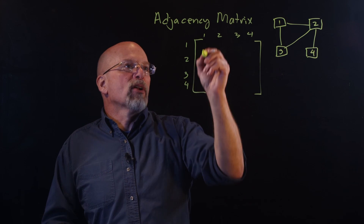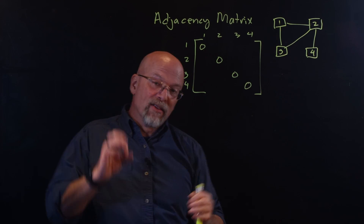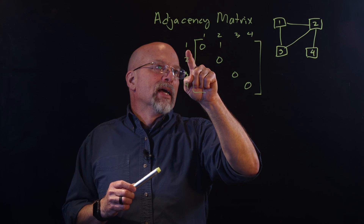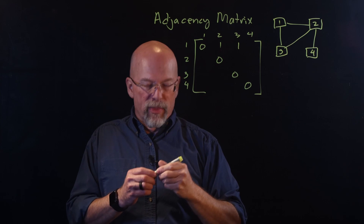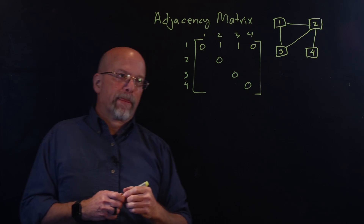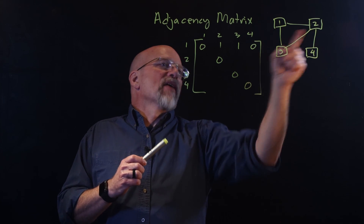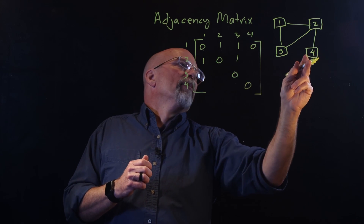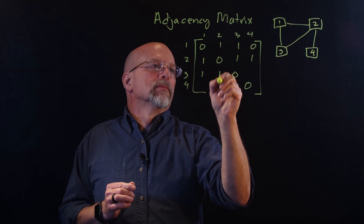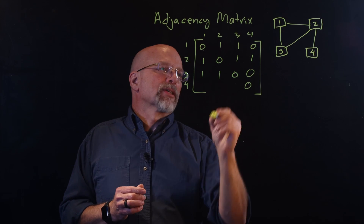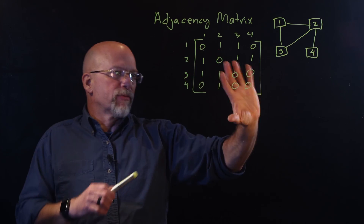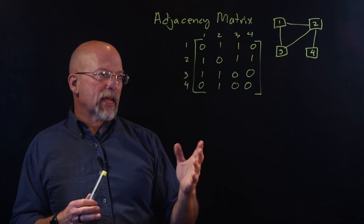To go from a node to itself, the distance is zero. Node 1 connects to 2 and 3 but not 4, so row 1 is [0, 1, 1, 0]. Node 2 connects to 1, 3, and 4, giving [1, 0, 1, 1]. Node 3 connects to 1 and 2 but not 4: [1, 1, 0, 0]. Node 4 only connects to 2: [0, 1, 0, 0]. This is a symmetric matrix — transposing it gives the same matrix.